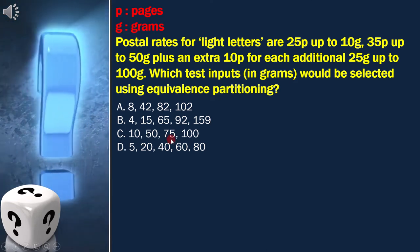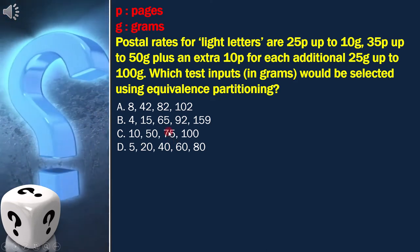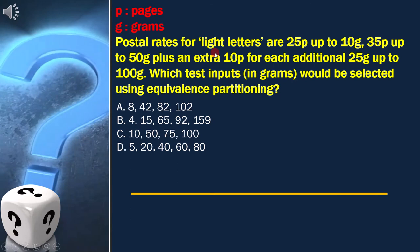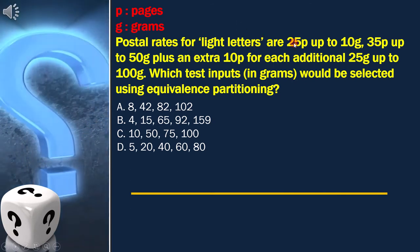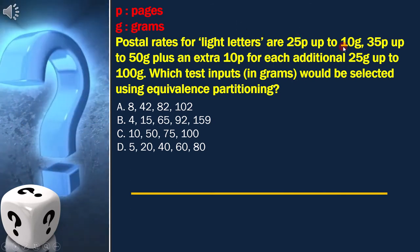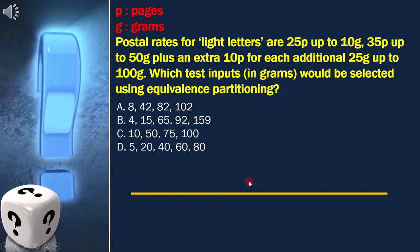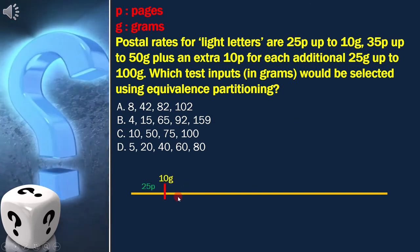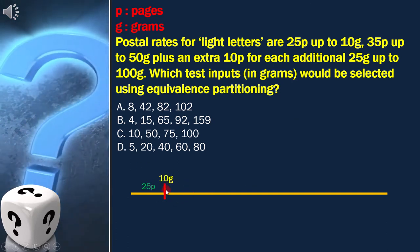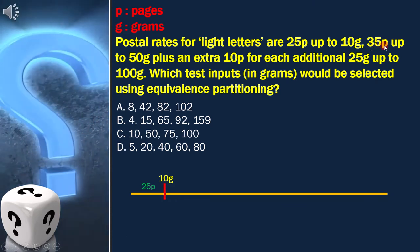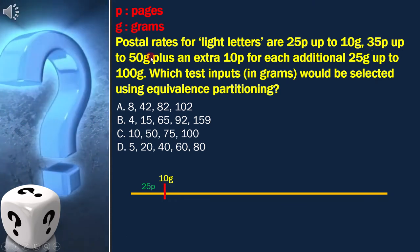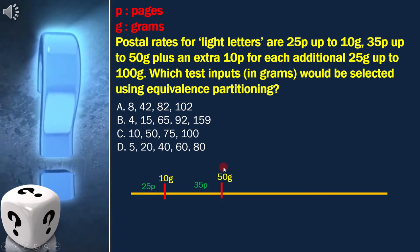Let's draw the equivalence partitioning diagram. As per the question, postal rates for light letters are 25p up to 10g. So here, 10g is at the boundary. Next condition is 35p up to 50g. The next boundary is at 50g.